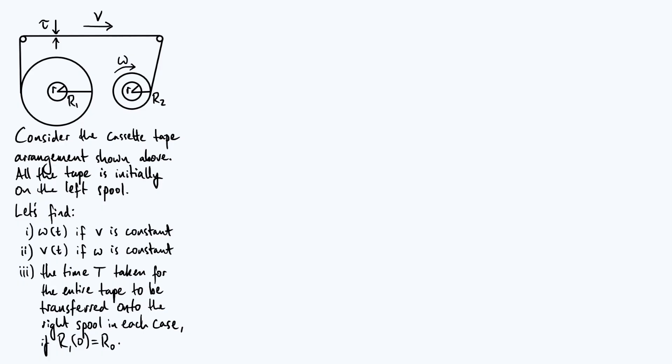We start with all tape rolled onto the left spool. First, we'll consider the case where v is constant, so the tape moves at constant speed. We want to think about how the angular velocity omega of the right hand spool needs to vary with time to maintain that constant velocity. Once we've done that, we'll consider the opposite case where omega is constant, and we want to know the linear speed of the tape. The first case is more physically realistic for a real cassette tape player.